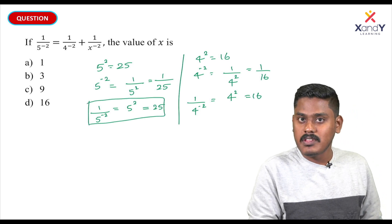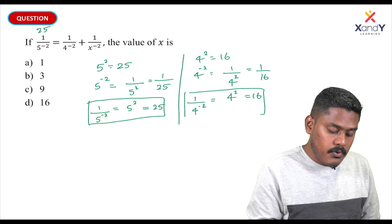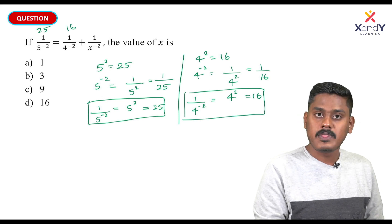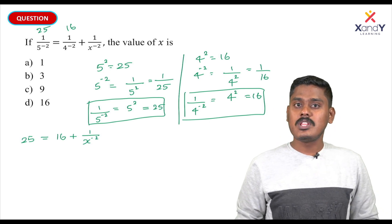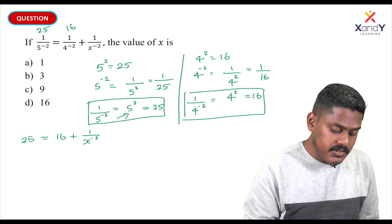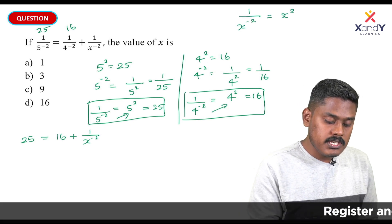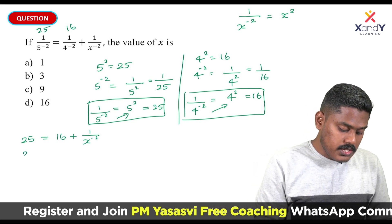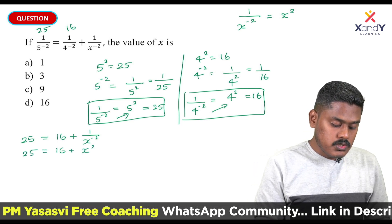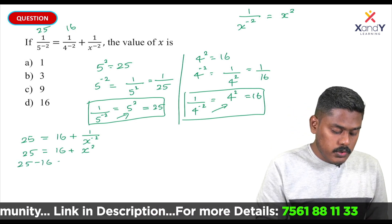5 squared is 25. 1 by 4 raised to minus 2 becomes 4 squared. So 25 is equal to 16 plus 1 by x raised to minus 2. Since 1 by x raised to minus 2 equals x squared, we get 25 is equal to 16 plus x raised to 2. Therefore, 25 minus 16 is equal to x raised to 2.